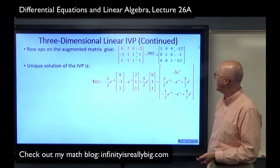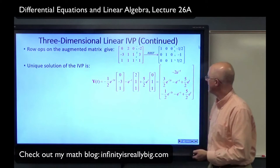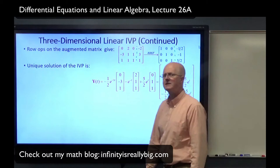Plug those numbers in and you get your solution of the IVP: K1 = −1.5, K2 = −1, K3 = 5.5. You can write it as a linear combination, or mash them all together into one vector if you like.